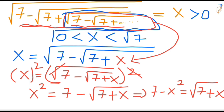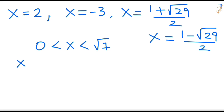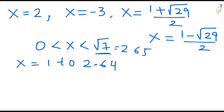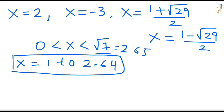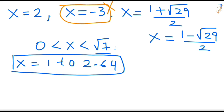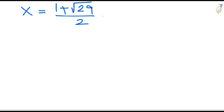Now look at our domain: 0 less than X less than root 7, so X lies between 0 and 2.64. We have four roots: 2, minus 3, (1 plus root 29) over 2, and (1 minus root 29) over 2. Negative values are excluded — so minus 3 and the fourth root are invalid. Let's evaluate the third root: (1 plus root 29) over 2. We first need the value of root 29, which is a non-perfect square.